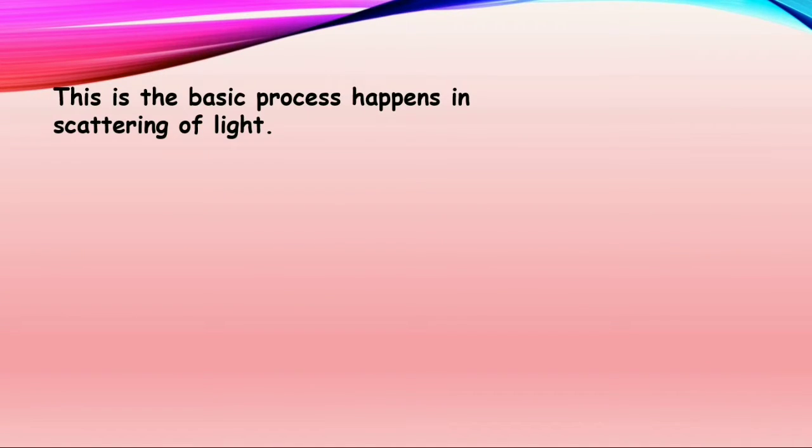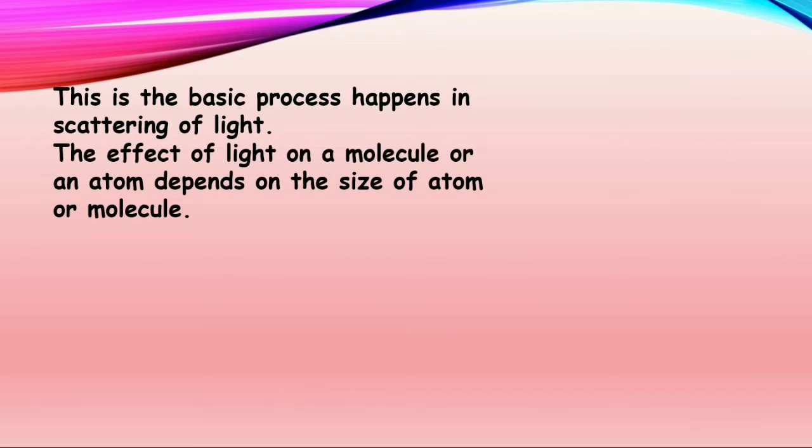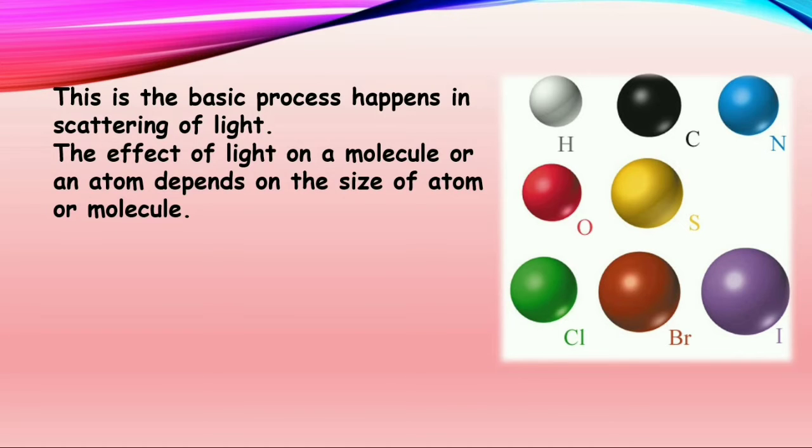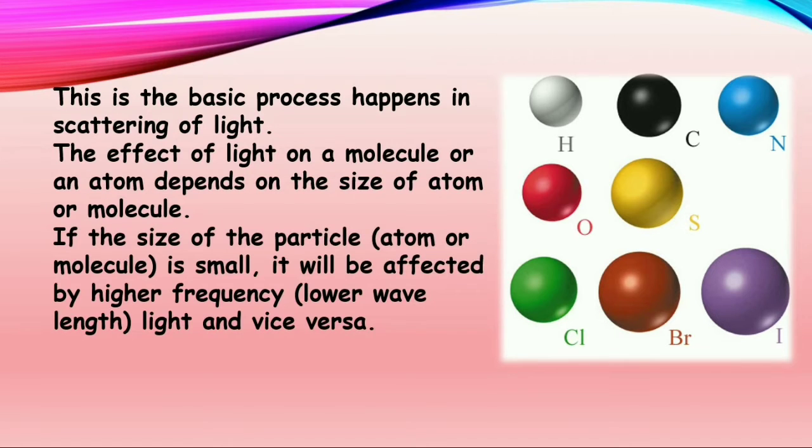This is the basic process that happens in scattering of light. The effect of the light on a molecule or an atom depends on the size of the atom or molecule. So these are the different sizes of the atoms: H means hydrogen atom, N means nitrogen, I means iodine. Every atom has its own size. If the size of the particle is small, it will be affected by higher frequency light and vice versa.